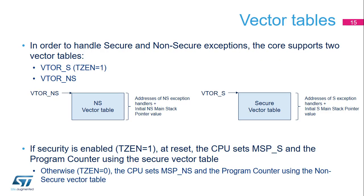When TrustZone is enabled, non-secure exceptions are handled by the non-secure kernel and secure exceptions are handled by the secure kernel. Consequently, two separate vector tables are implemented. The two first entries of each vector table are reset vectors — respectively the default main stack pointer register value and the default program counter (PC) register value. Unlike v7M cores such as Cortex-M4, the default location of the vector table is not necessarily at address 0.